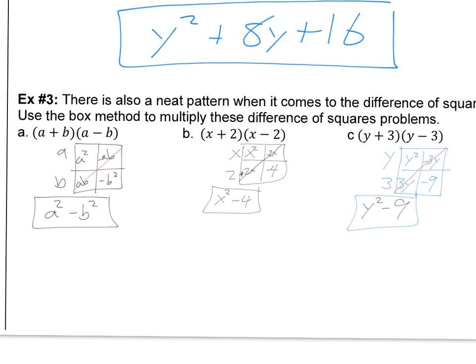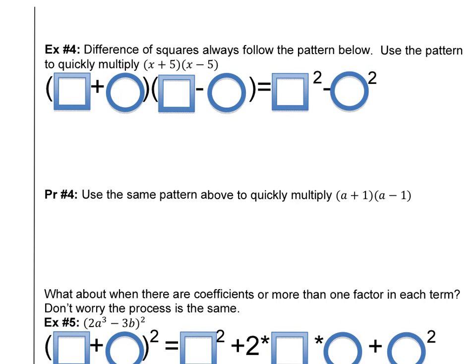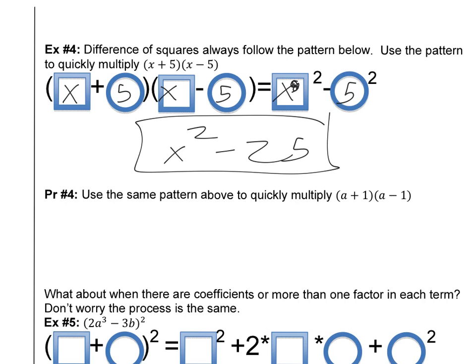Now let's use this pattern. When we have something plus something and then the same first thing minus the same second thing, we just do the first thing squared minus the second thing squared. If this were x plus 5 and x minus 5, all we do is x squared minus 5 squared, giving x squared minus 25. For practice number 4 — pausing the video — the answer is a squared minus 1 squared, which is just a squared minus 1.